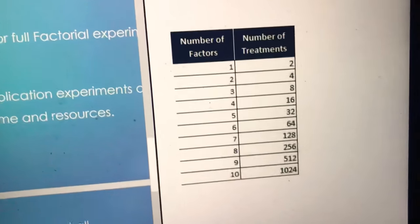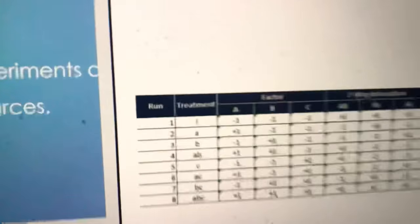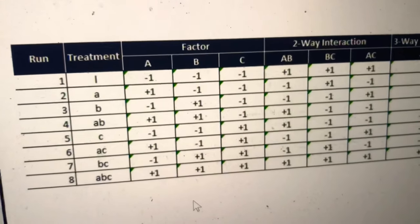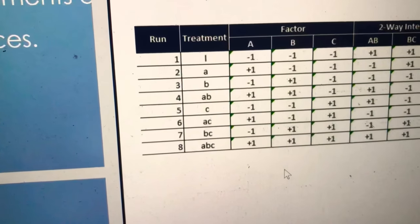Here is an example of what just 3 different factors A, B, and C requires: 8 different runs.